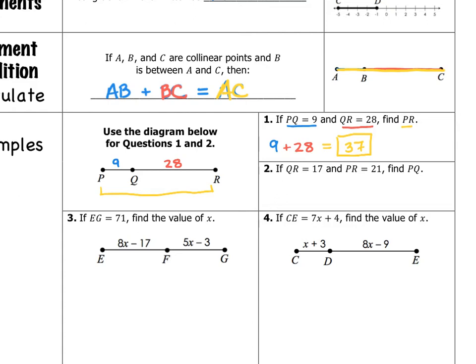Number two: this time QR is equal to 17 and PR is equal to 21, so that's the entire segment. We're supposed to find PQ. To do that, I can take the entire segment, 21, and subtract that 17. And then I get an answer of 4.